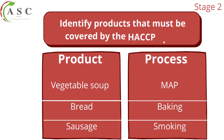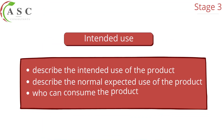You may also include information about the process used to make the product — for example, you can state that it is vacuum packed meat, which informs the consumer that the product is vacuum packed. Now let's move to stage three.